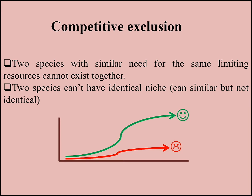According to the principle of competitive exclusion, not all species can occupy the same ecological niche at the same time. The species more efficient in using resources will exclude the other. Therefore, two species cannot have identical niches — they may be similar, but not identical. Thank you.